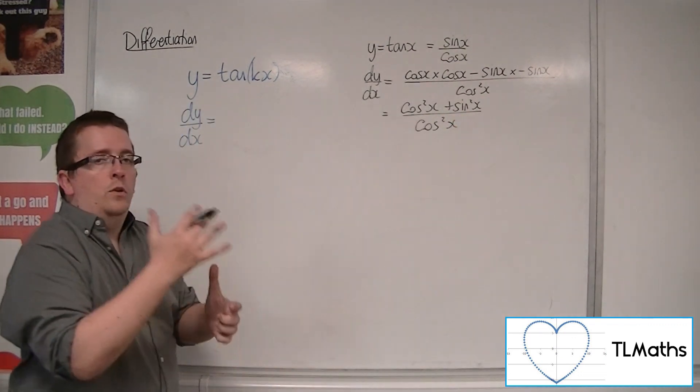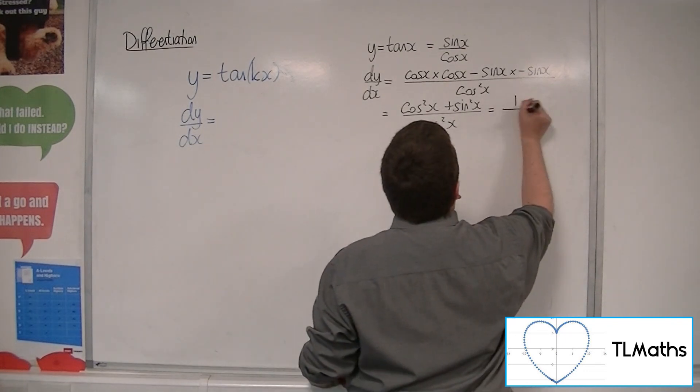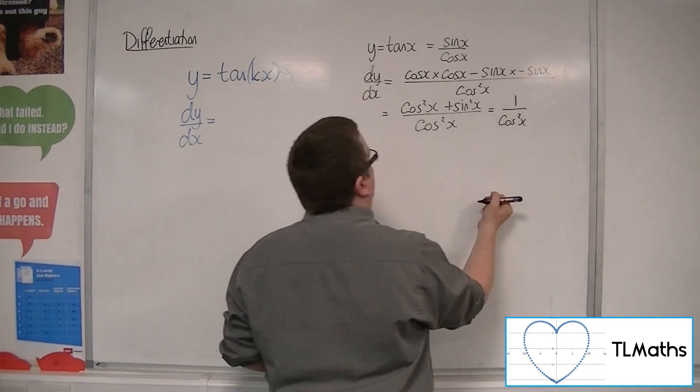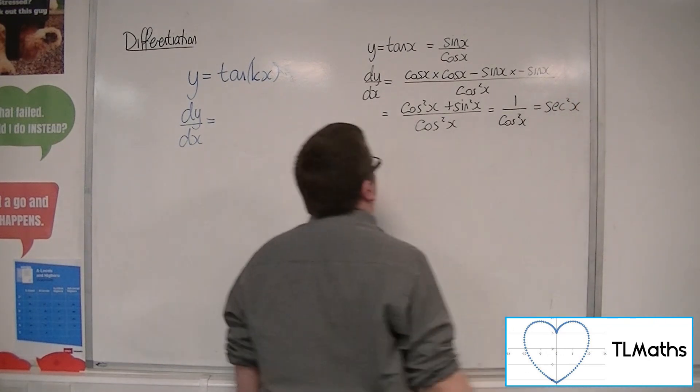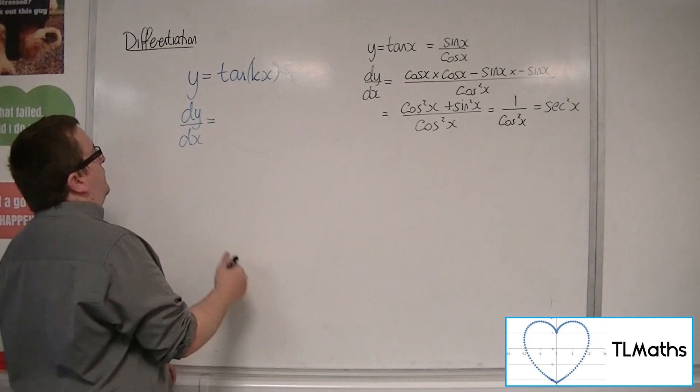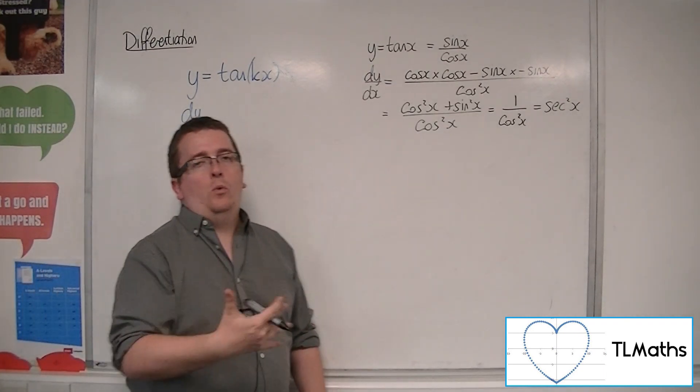Now, cosine squared plus sine squared is 1. So this is 1 over cosine squared or sec squared x. So in actual fact, tan x differentiates to sec squared x.